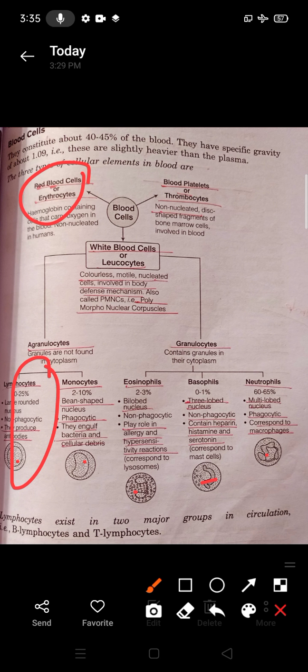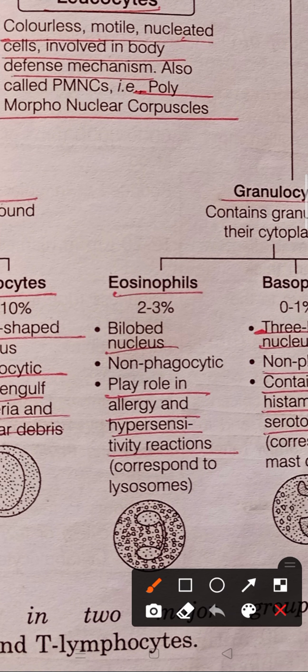In granulocytes, eosinophils constitute 2 to 3 percent of blood. They have a bilobed nucleus — two lobes are present. They are non-phagocytic but play an important role in allergy and hypersensitivity. When a person has a severe cold and cough, doctors may say the person has eosinophilia — meaning the number of eosinophils in blood has increased.